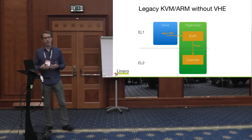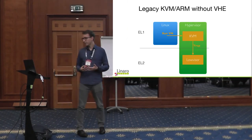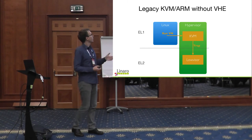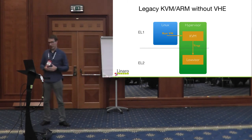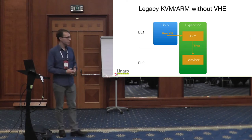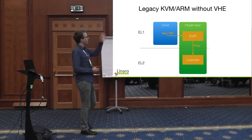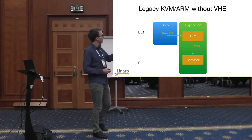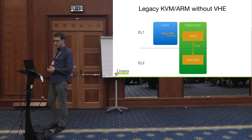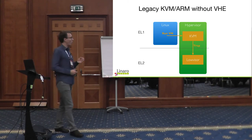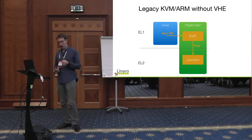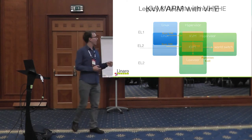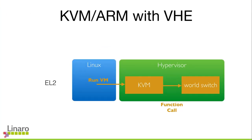With VHE we can run Linux in EL2 unmodified, which is great. KVM has to be modified to work with VHE though. In the legacy split-mode design, Linux would call KVM code and then issue a trap to enter the EL2 portion of KVM before running the VM. With VHE, all we have to do is change instructions accessing EL1 registers to use the new EL1_EL2 accessors, and change the trap to a function call — now everything runs in EL2, and you're done.